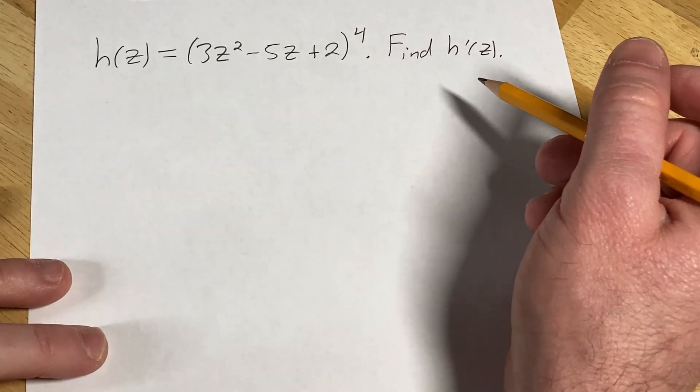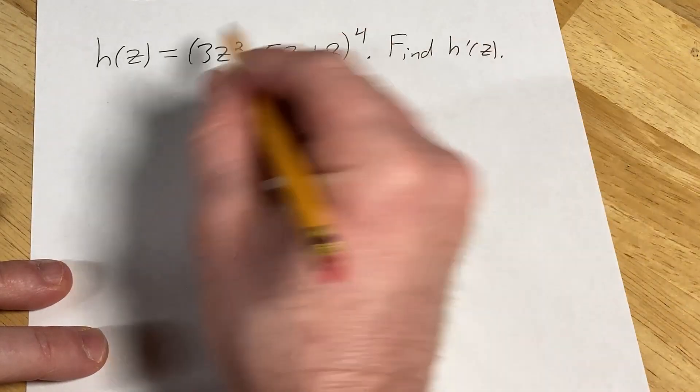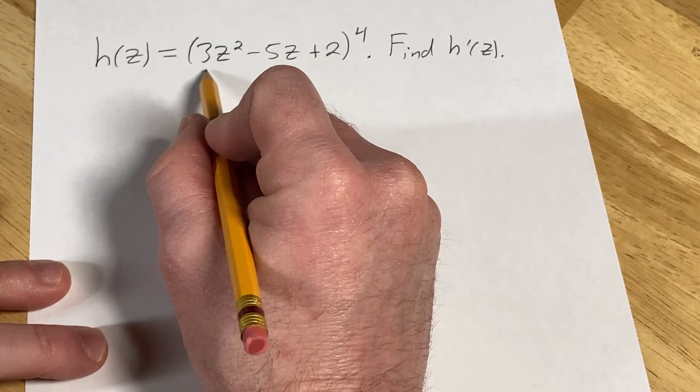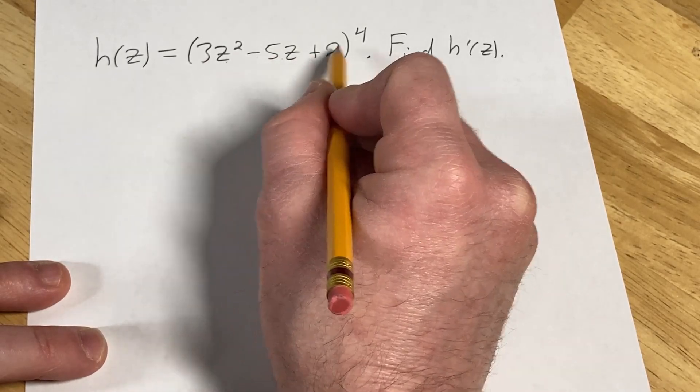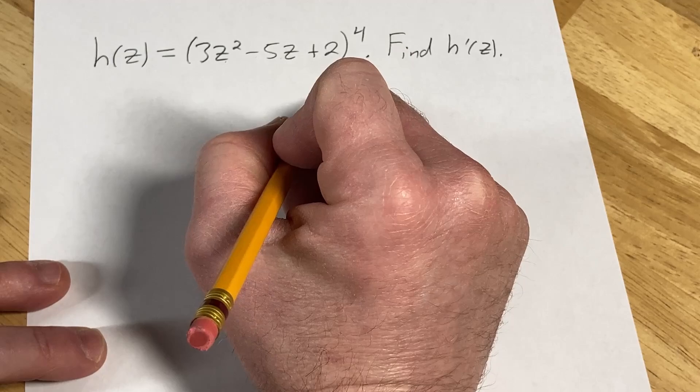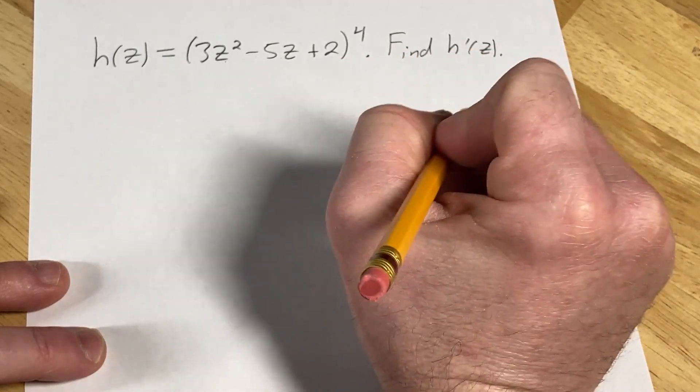Hello, in this video we're going to do an example of a derivative. Our function is h of z equal to parentheses 3z squared minus 5z plus 2, and the whole thing is being raised to the fourth power. The question is to find h prime of z.